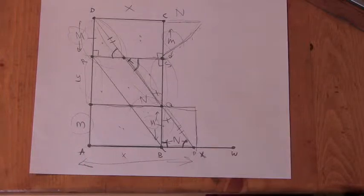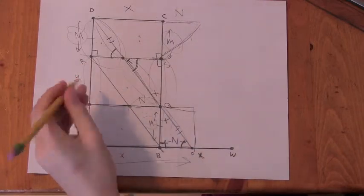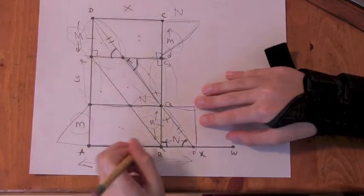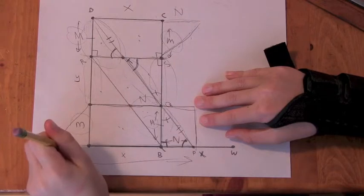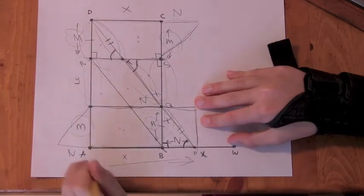But maybe, maybe I can take this triangle and put it here. Because this has length N. Okay.